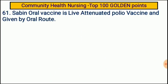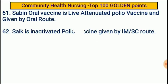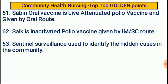OPV is a live attenuated polio vaccine given by oral route. Salk is an inactivated polio vaccine given by IM or subcutaneous route. Sentinel surveillance is used to identify hidden cases in the community.